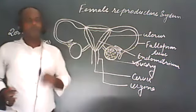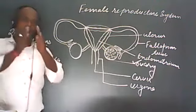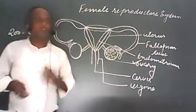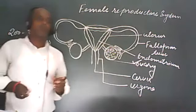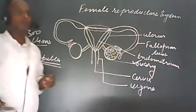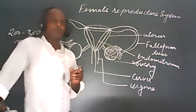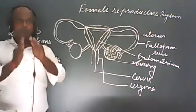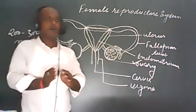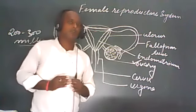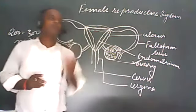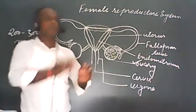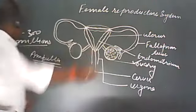After fertilization and zygote formation, there is mitotic division leading to the formation of the morula stage. This morula stage occurs after multiple divisions of the zygote. After morula, there is the blastocyst stage.